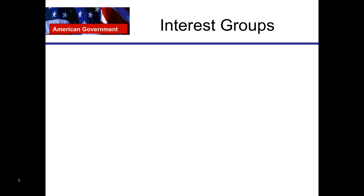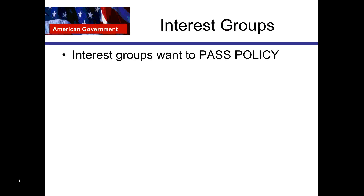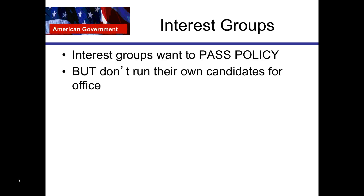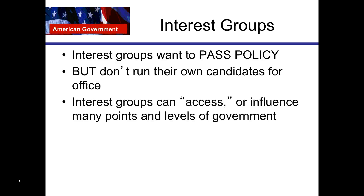What is an interest group? Interest groups want to pass policy. Political parties want to do this too. The difference is interest groups don't run their own candidates for office. So, interest groups want to pass policy but they do not run their own candidates for office.